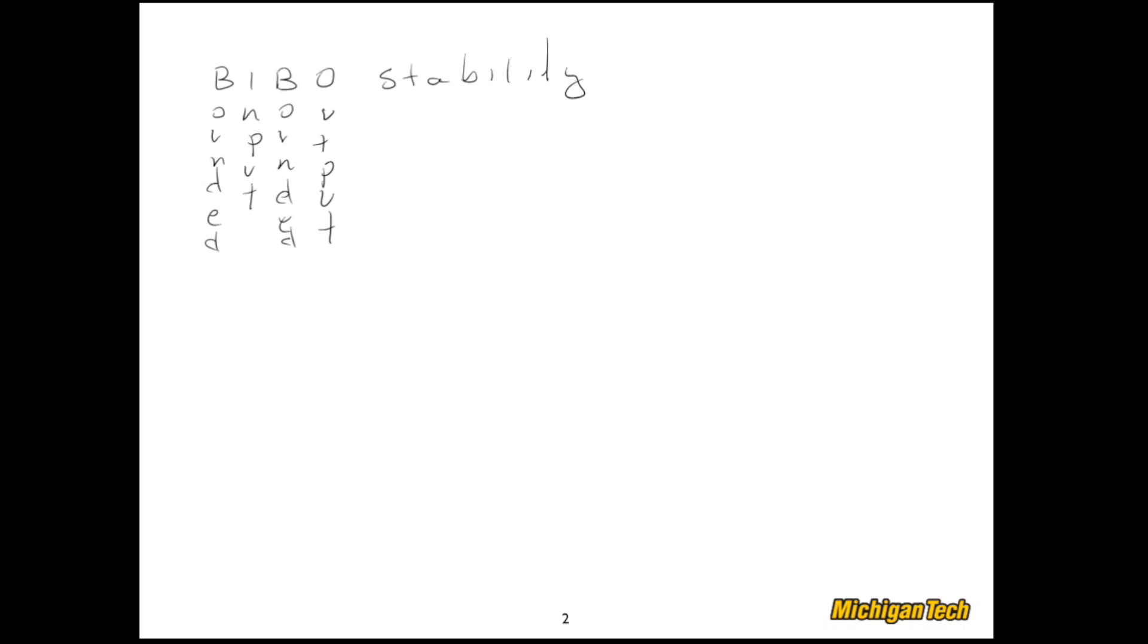It's an inherent feature of the system. So if someone says my system is BIBO stable, it means that you can give it any bounded reference input and the output will be bounded. Here's a couple examples of what I mean by a bounded input. Certainly a step is a bounded input, but if it was more interesting, that's a bounded input—it's bounded by that dashed line that I drew at the beginning. A sine wave, cosine wave is bounded.